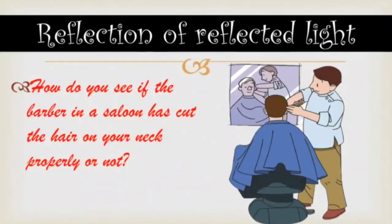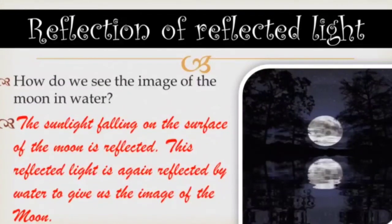Let us see reflection of reflected light. Students, can you tell how you see if the barber in a saloon has cut the hair on your neck properly? In a saloon, there are mirrors in front of you and at the back. The image of the back of your head is formed in the mirror at the back, and the image of this image is formed in the mirror in front of you. As the moon is not self-luminous, sunlight falling on the surface of the moon is reflected. This reflected light is again reflected by water to give us the image of the moon. In this way, light can be reflected several times.